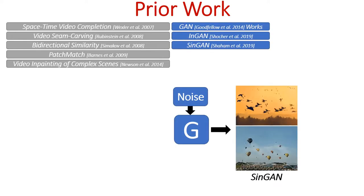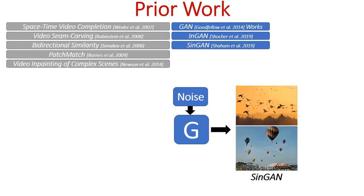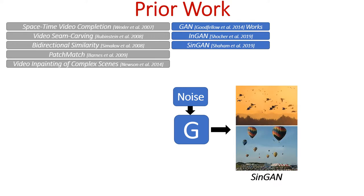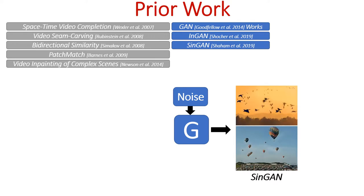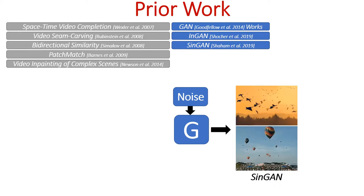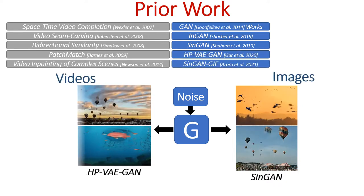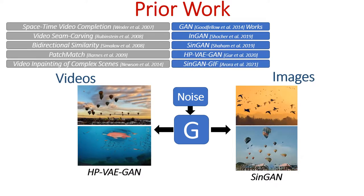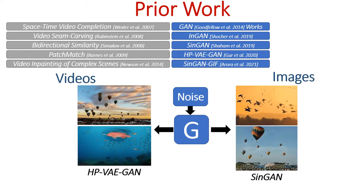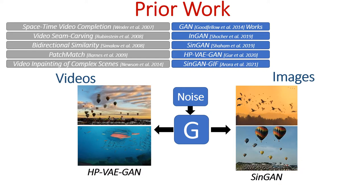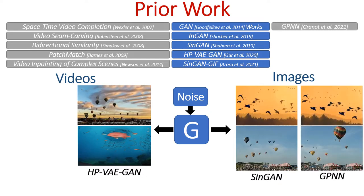SinGAN and INGAN train on a single image, learning to map noise inputs to the distribution of image patches. This way, they generate diverse images given only a single image. These were later extended to diverse generation of videos from a single video. Last year, GPNN by Granot et al.